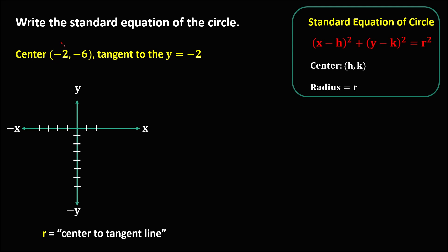For this problem, we plot the center where x is negative 2 and y is negative 6, then connect to locate the center. Since the circle is tangent to y equals negative 2, this is the tangent line. To find the radius from the center to the tangent line, we count at the opposite side: 1, 2, 3, 4 — so the radius is equal to 4.